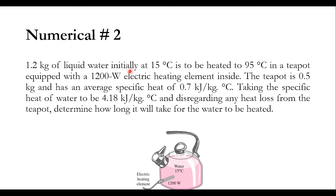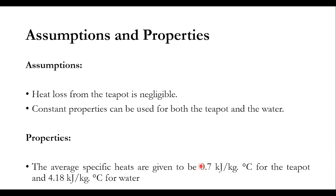The assumptions are: no heat loss from the teapot, and constant properties can be used. The constant properties are: specific heat for the teapot is 0.7 kJ per kg degree centigrade, while that for water is 4.18 kJ per kg degree centigrade.